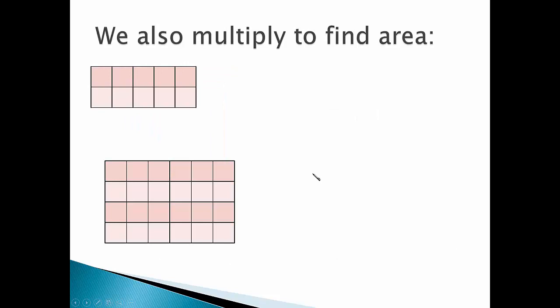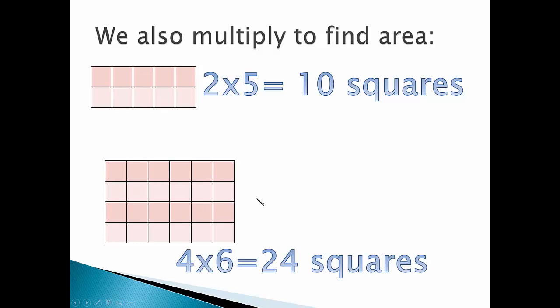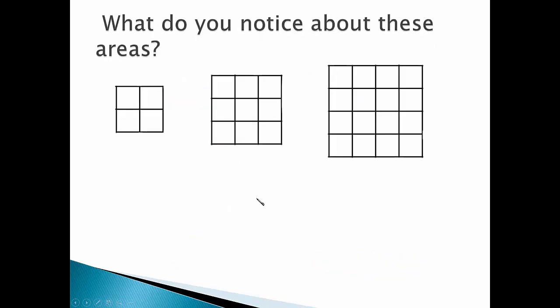We also multiply to find area. 2 times 5 is 10 squares. 4 times 6 is 24 squares. What do you notice about these areas?